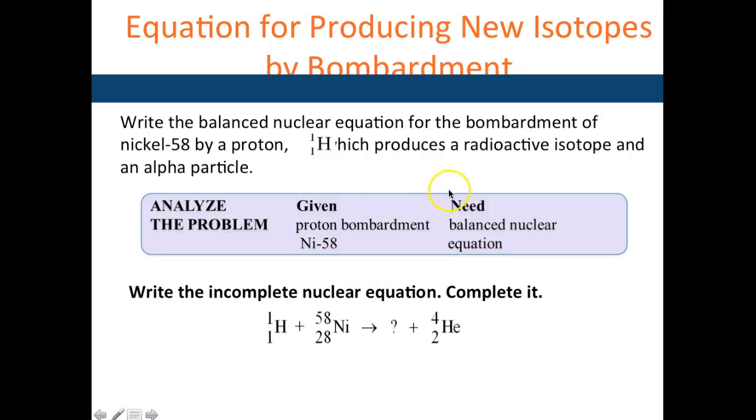For the balanced equation for the bombardment of nickel-58 by a proton, what is the particle being produced? The atomic number total is 29, so that would be 27 plus 2 would give you 29 - that's cobalt. The mass is 59, but 59 minus 4 would be 55. So cobalt-55 (27).